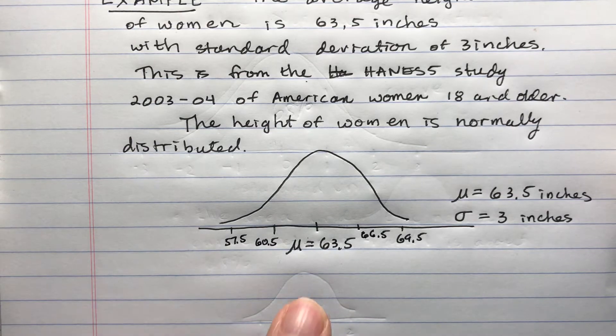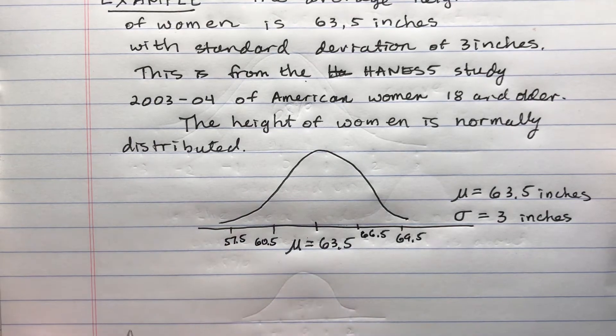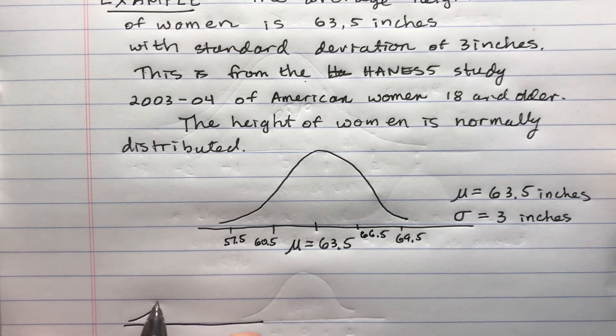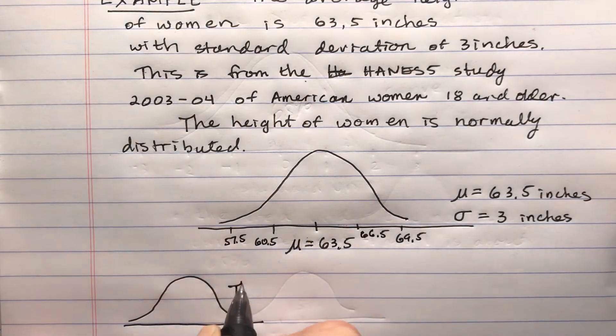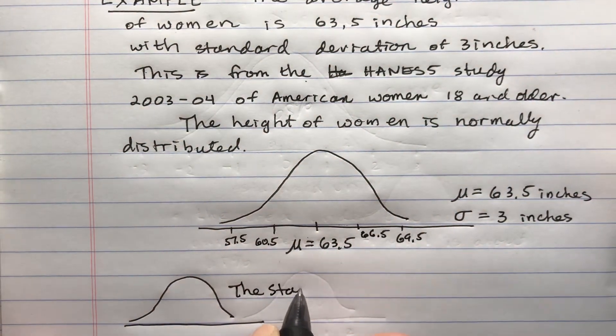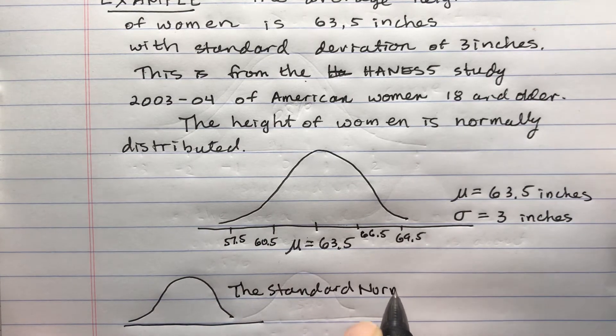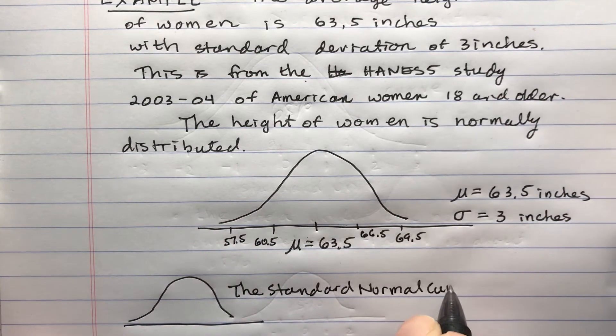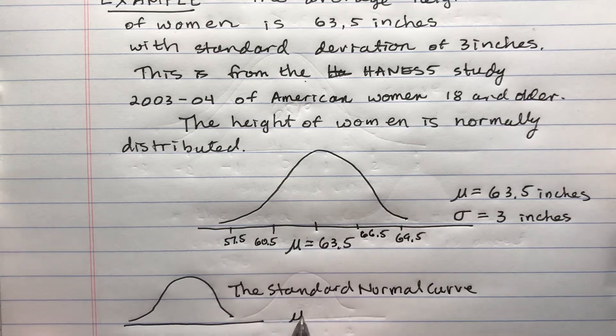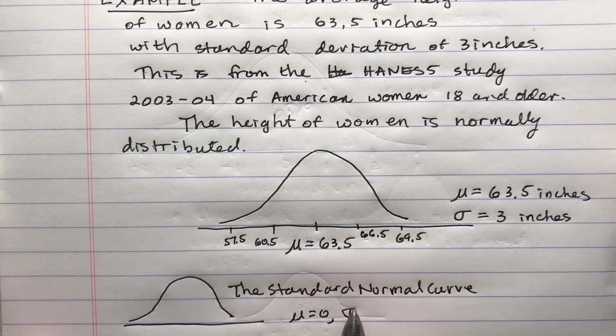This is different from the standard normal curve, where the mean is 0 and the standard deviation is 1.